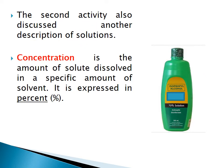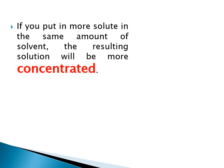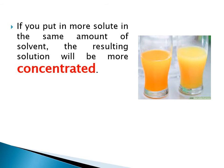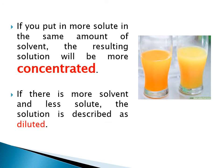The second activity also introduced concentration, which is the amount of solute dissolved in a specific amount of solvent, expressed in percent. If you put more solute into the same amount of solvent, the resulting solution is more concentrated — the solute amount is higher relative to the solvent. In the activity, the glass with four tablespoons of powdered juice is concentrated, while the other is diluted. When there is more solvent and less solute, it is described as diluted.